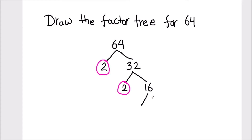We keep on dividing the numbers until we get all prime numbers. So 16 can be divided into 2 numbers: 2 times 8 is 16. 2 is a prime number, so we are going to circle 2. Then 8 can be divided into 2 numbers: 2 times 4 is 8. And 4 can further be divided into 2 numbers: 2 times 2 is 4.